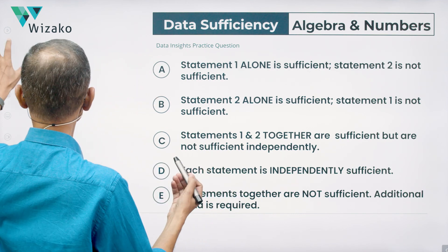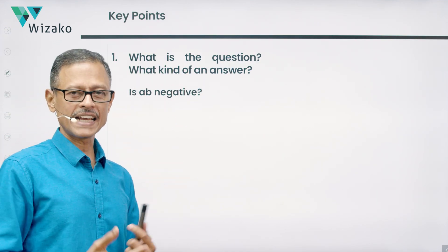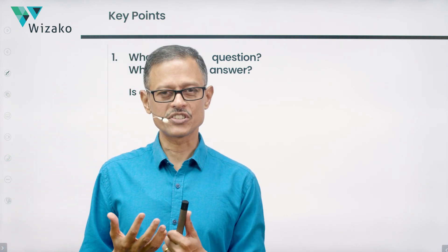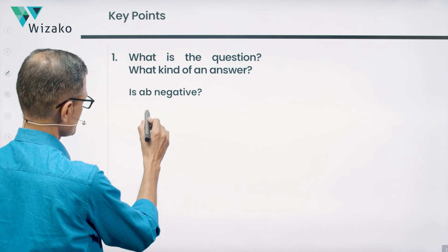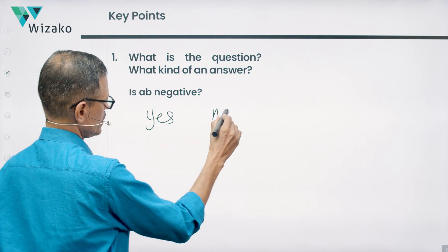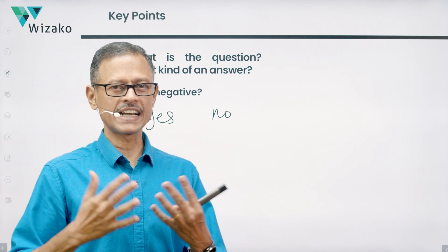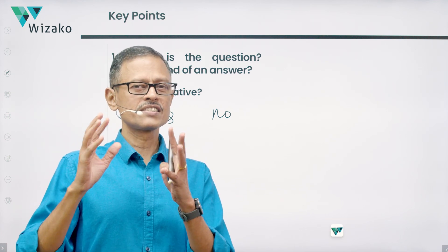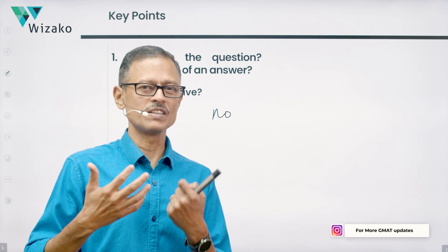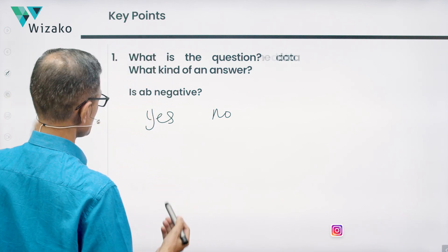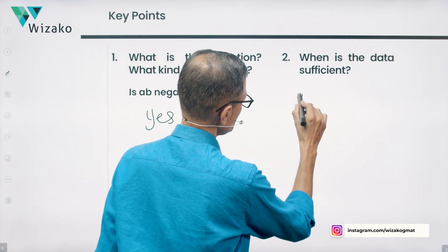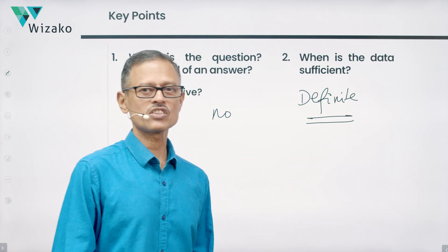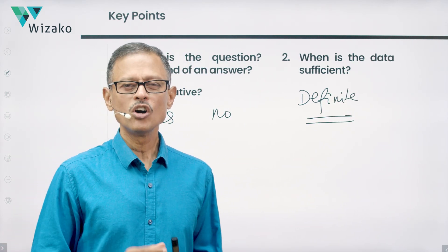Let's quickly run through the process. What is the question that we have? Is AB negative the question? For any is question, when it comes to data sufficiency, the answer is going to be either a yes or a no. We're going to say that yes, AB is negative, if it happens to be negative, or we'll say AB is not negative. This is the kind of answer that any is question, yes/no question will fetch. When is the data sufficient? The data is sufficient when we have a definite yes or a definite no. The definitiveness of the answer is what we are looking at.